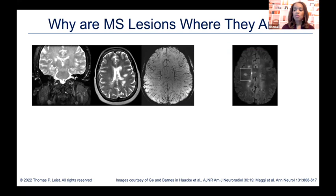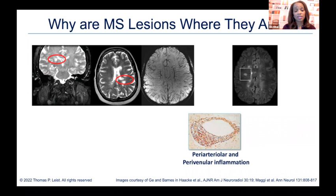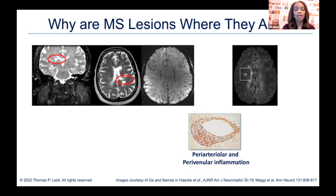MS lesions — where do we find them? The periventricular, juxtacortical, and infratentorial lesions are classic places for MS activity. Fortunately, we do not have to do biopsies to make the diagnosis of MS. But if we did, we would see that these lesions occur around areas of blood vessels where most of these inflammatory cells travel over time.